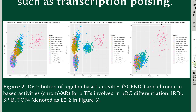And in the case of TCF4, for which both types of activity are only present in the plasmacytoid dendritic cells, we can hypothesize that it is actively involved in forming the regulatory context that is required for activation of the regulons of the other two transcription factors.